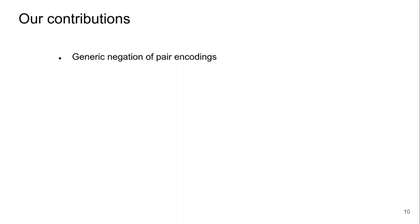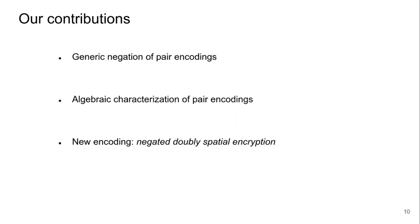In this work, we propose a generic transformation that takes any pair coding scheme and produces a new pair coding scheme for the negated predicate. We solved the open problem of generic negation of pair codings. Along the way, we provide an algebraic characterization of pair codings that can be of independent interest. Our transformation leads to new encodings — for example, we propose the first pair coding for negated doubly spatial encryption. We will also discuss other implications of our results and why this transformation is important.